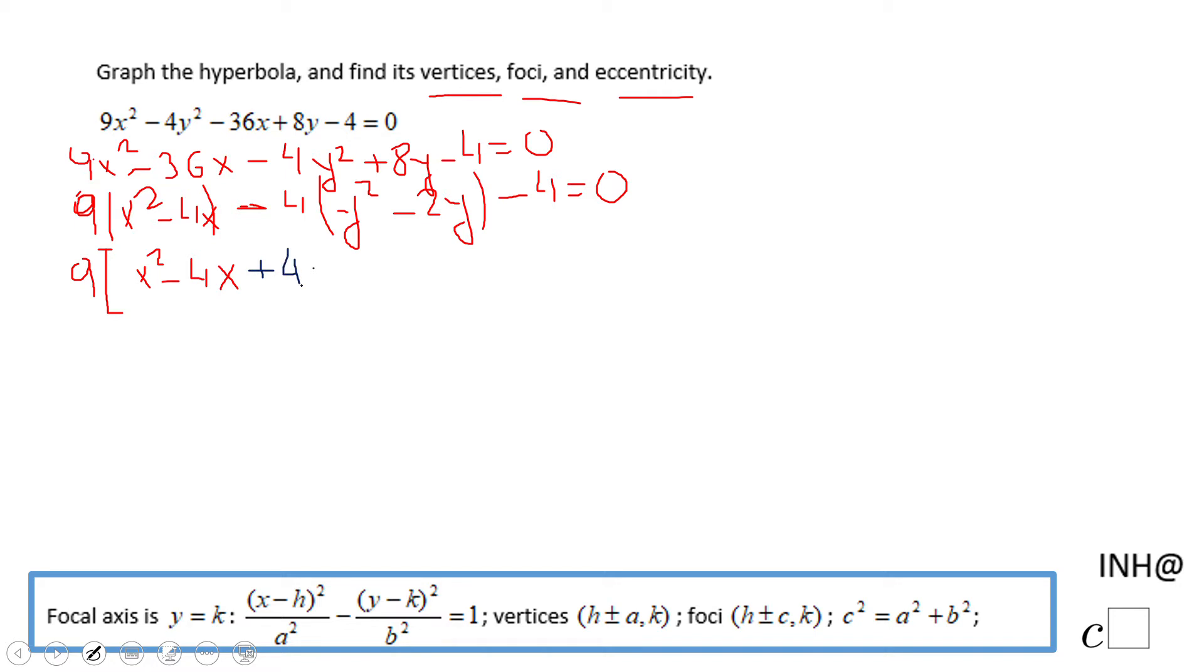And also we're going to subtract 4. This guy here is a perfect square because we created it, we completed. We're going to do the same thing with the second part, where we have y² - 2y. We're going to complete the square here. We have that 2 or negative 2 divided by 2 is 1 or negative 1, and if we square it, we get positive 1.